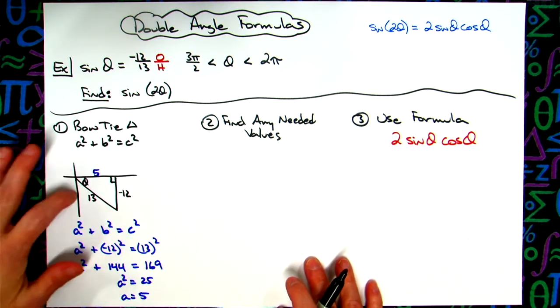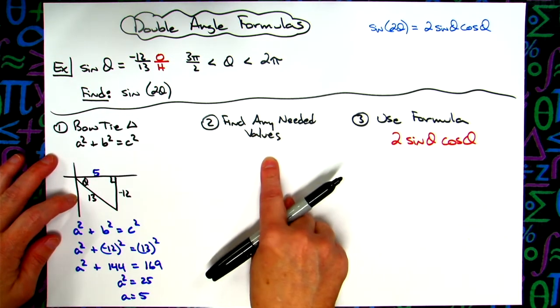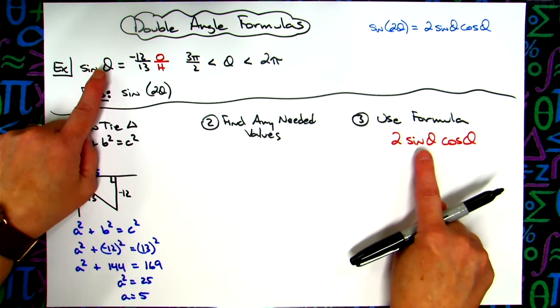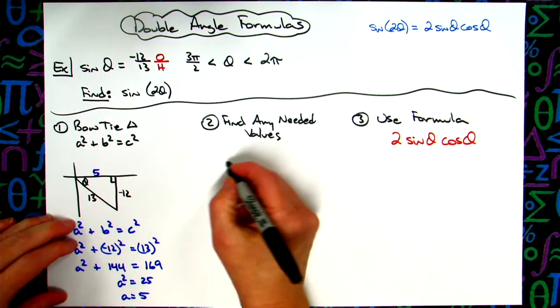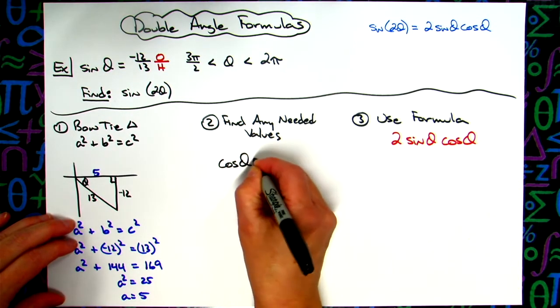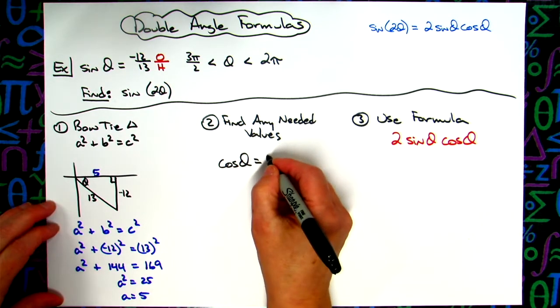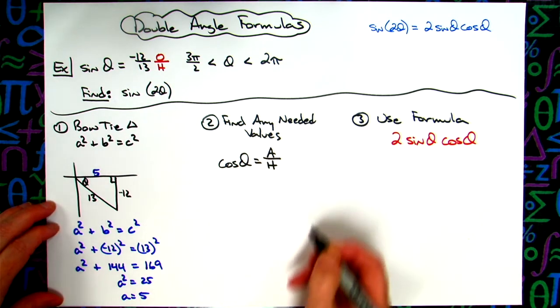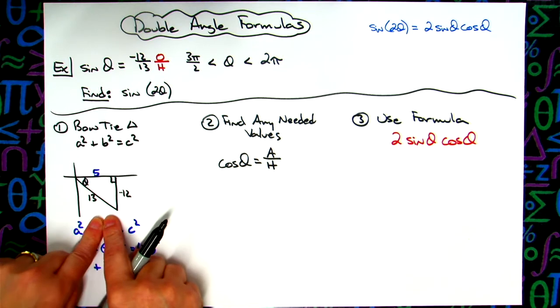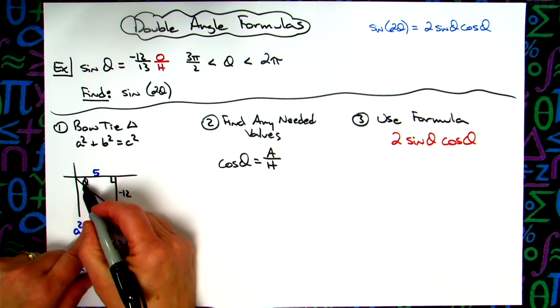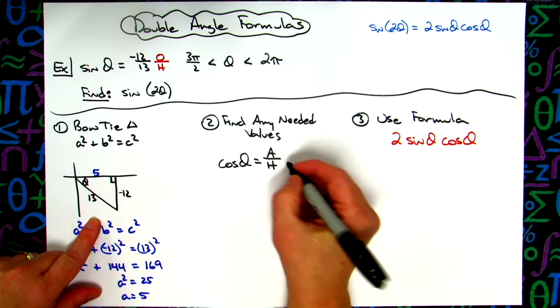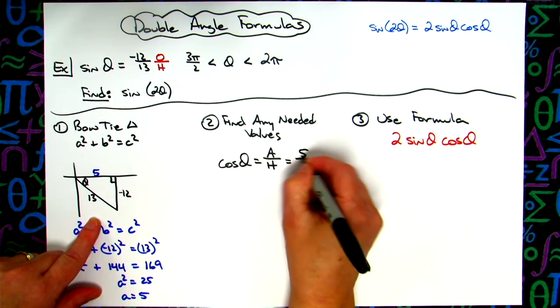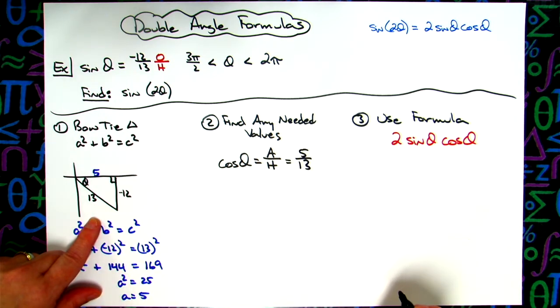Now we're going to use this bowtie triangle. We're going to find any values that we don't already know. Like I said, we know sine because they gave it to us. I need cosine. So cosine theta, well, we know cosine is adjacent over hypotenuse. So I'm going to come back to the triangle that I created. My adjacent side is 5. My hypotenuse side is 13. So that makes this value 5 over 13.